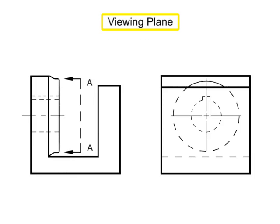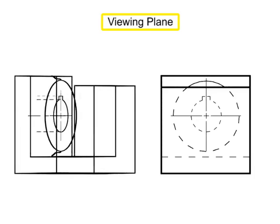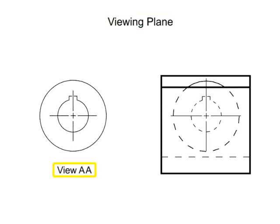A viewing plane line is a line that indicates a special type of detail view. A viewing plane line is very similar to a cutting plane line, but it does not actually cut the part or generate a section. A viewing plane line is used when an interior view of the part is helpful in illustrating characteristics, but a full section view is not required.